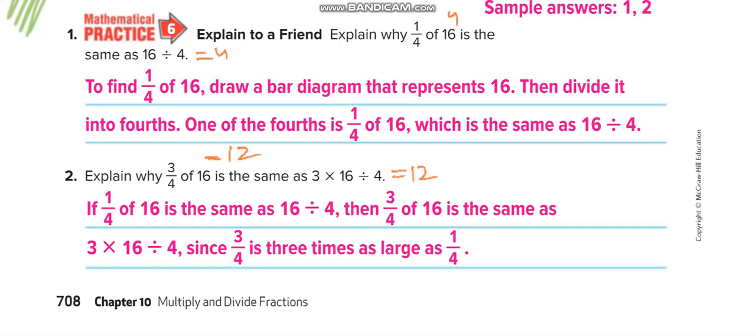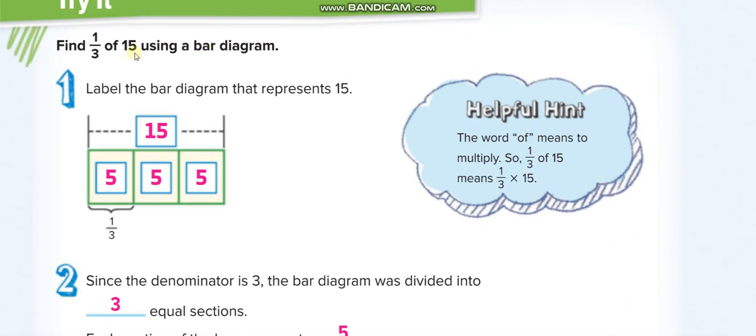Here, 1/3 of 15. So you will make 3 parts, total is 15. You will make 3 parts, each part is 5, 5, 5. Total is 15 and you will choose how many parts? The numerator, one part. So it is equal to just one part, 5. So 1/3 of 15 is 5.